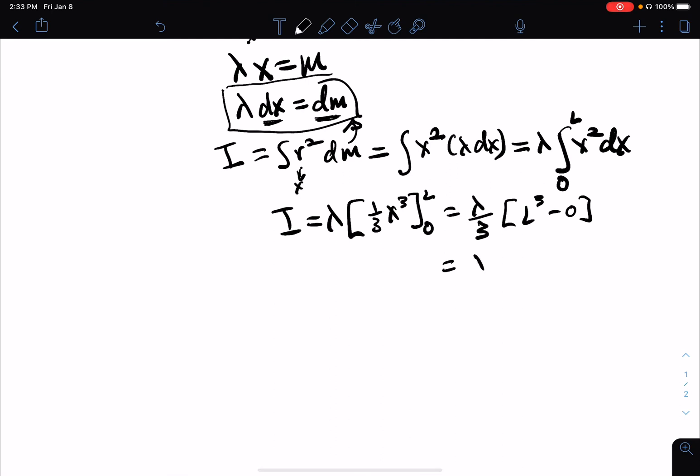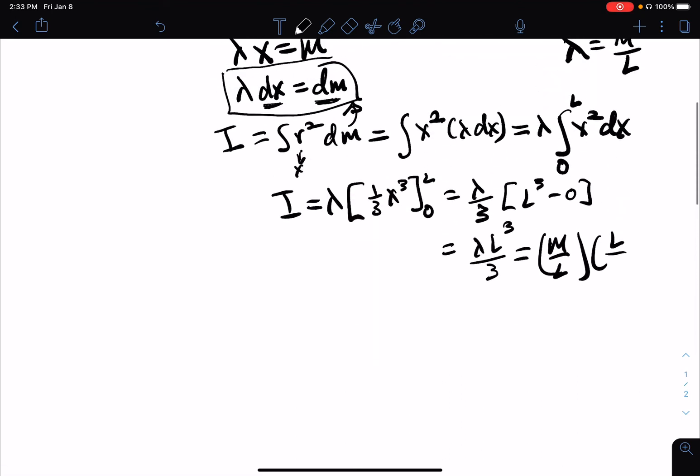So this is then lambda L cubed over three. We can replace lambda with M divided by L, the linear mass density. So we can replace lambda by M over L times L cubed over three - we're replacing lambda with M over L, but we still have the L cubed over three from our integral. One of the L's cancels and I'm left with an L squared, so the final answer is I equals one third M L squared.